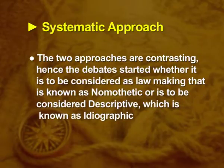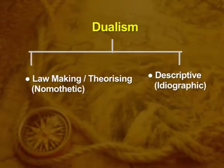The two approaches are contrasting, hence the debate started whether geography is to be considered lawmaking — known as nomothetic — or descriptive, known as ideographic. This is where the dichotomy arises. Dualism talks about lawmaking versus descriptive, and the dichotomy emerges in this area of geography.